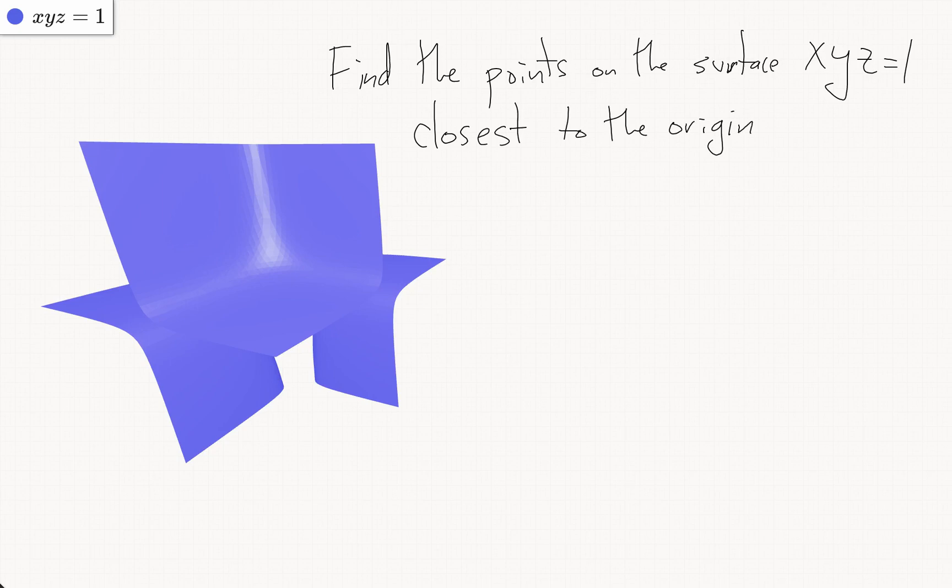There won't be any points farthest from the origin because the surface goes off to infinity, but we can look for the points closest to the origin.